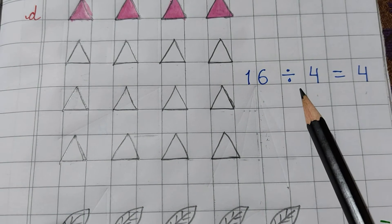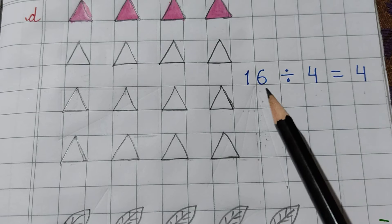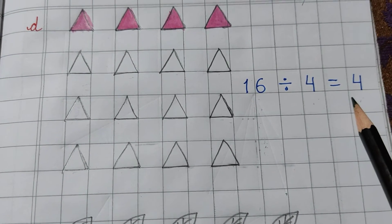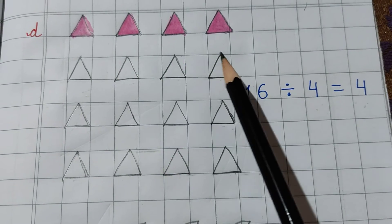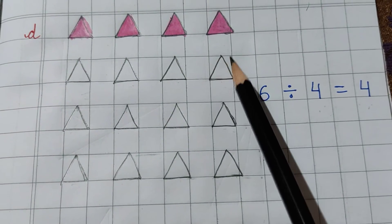So, I have written 16 here. We are doing one-fourth. That is why we have to divide it by 4. 4, 4 is a 16. That is why 4 is the answer. That is why I have colored 4 triangles here.